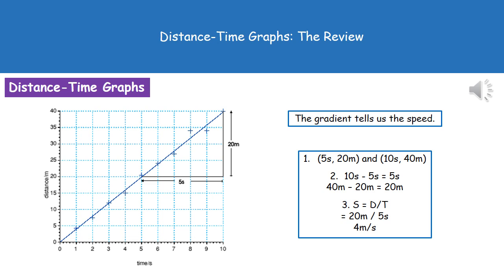The way we would work this out is by looking at the graph. You would come up from 5 seconds on the x-axis and read off the distance it's traveled in that time, which is 20 meters. Then you would do the same for 10 seconds, and we can see that after 10 seconds our object has traveled 40 meters.